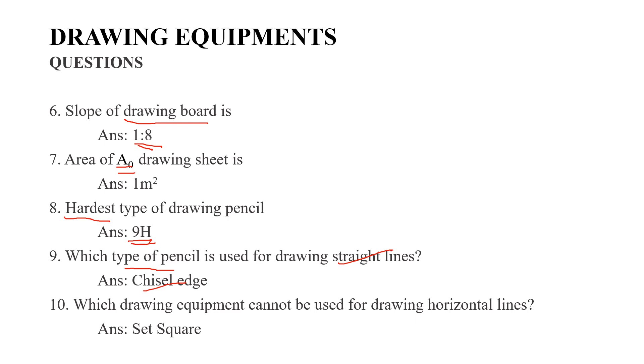Which drawing equipment cannot be used for drawing horizontal lines? The answer is set square. Set square cannot draw horizontal lines.